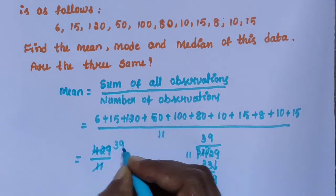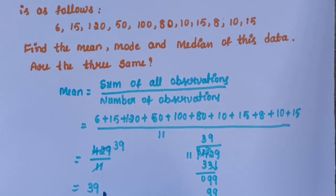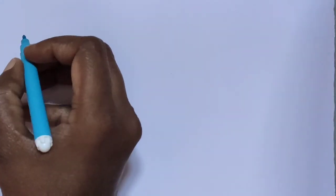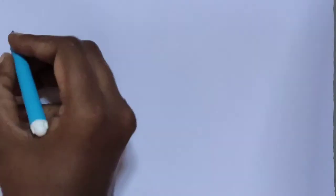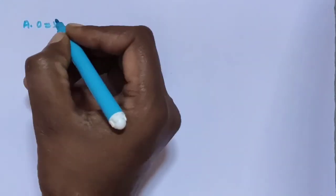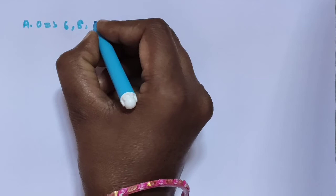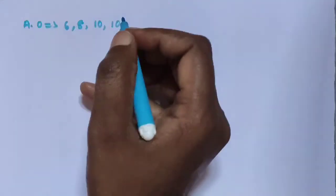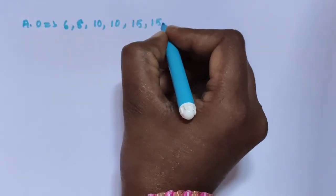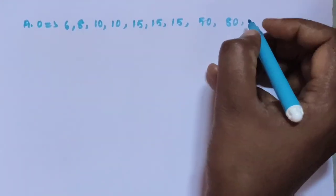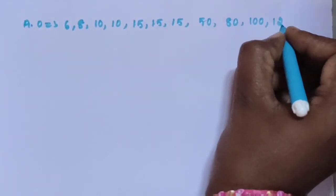The answer is 39. So 39 is the mean. Next find the median. Arrange the numbers in ascending order: 6, 8, 10, 10, 15, 15, 15, 50, 80, 100, 120.